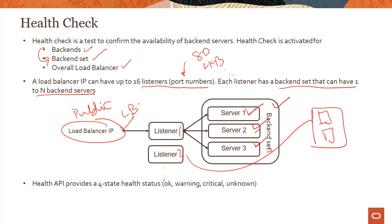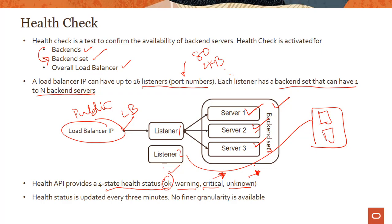The health API provides a four-state health status: OK (everything is good), Warning, Critical (backends have an issue and are not working), and Unknown (for example, if you are using HTTP health checks but haven't configured the response URL, it returns Unknown because it has no way to get a response back). Health status is updated every three minutes — no finer granularity is available. That covers the first module on load balancer, specifically the public load balancer. In the next module, we'll take a look at the public load balancer in action. Thank you.